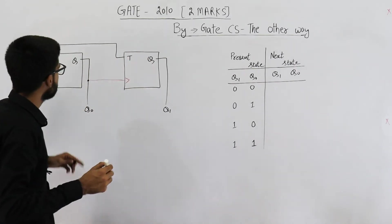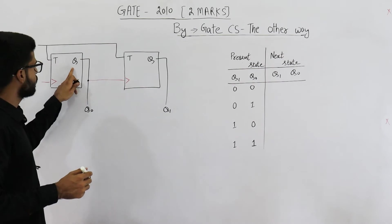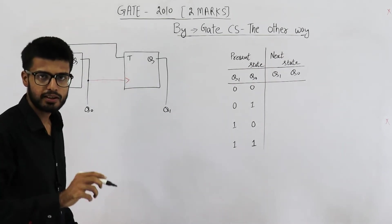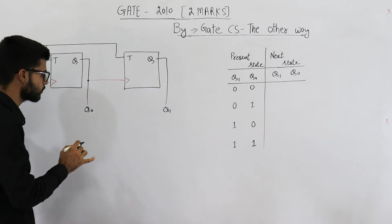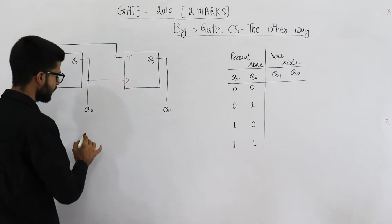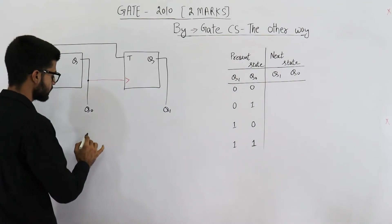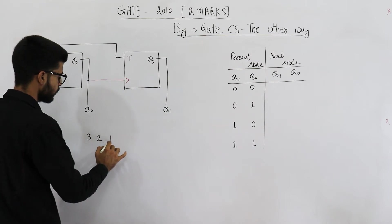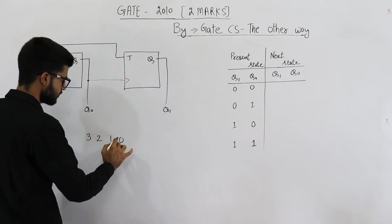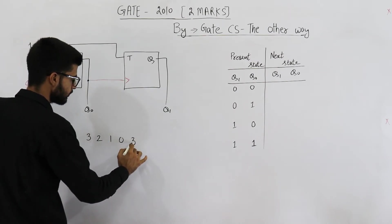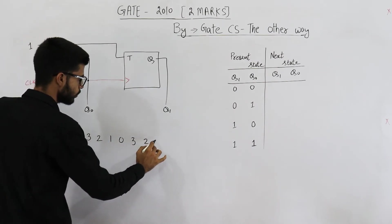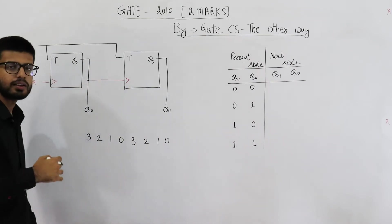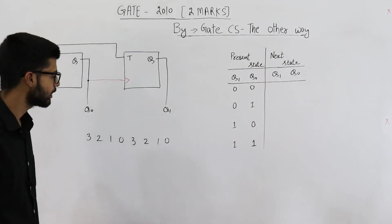There is a first flip-flop and a second flip-flop, meaning it is a two-bit counter. A two-bit down counter will have a counting sequence like this: 3, 2, 1, 0, then again 3, 2, 1, 0, and so on. This loop will keep on repeating.